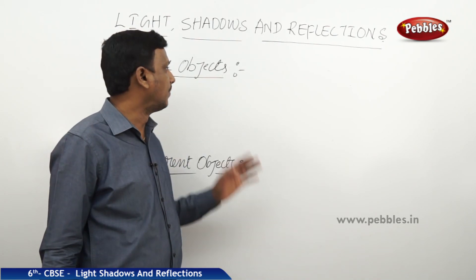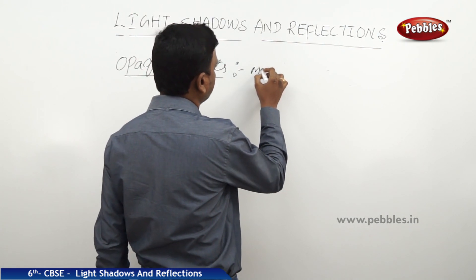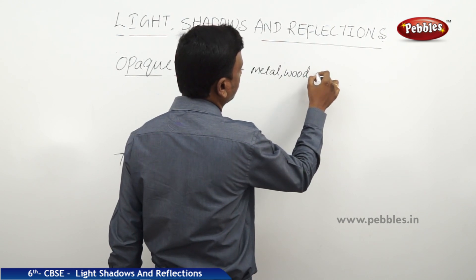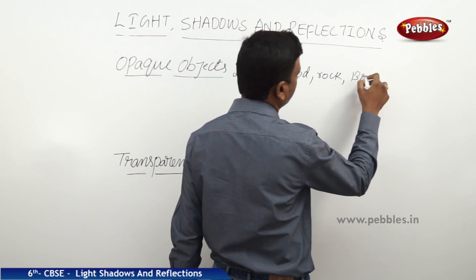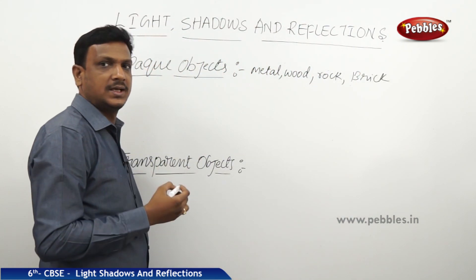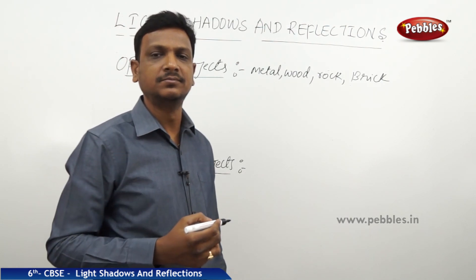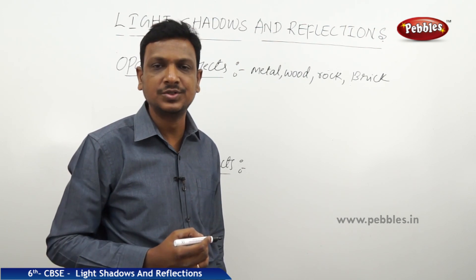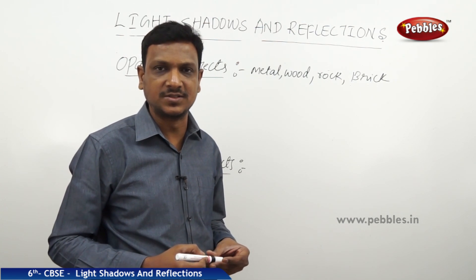Let us see some examples of opaque objects and transparent objects. Any metals, wood, rock, and brick are examples of opaque objects. You yourself can make a table and collect some items in your house, then check whether these objects are opaque or transparent.